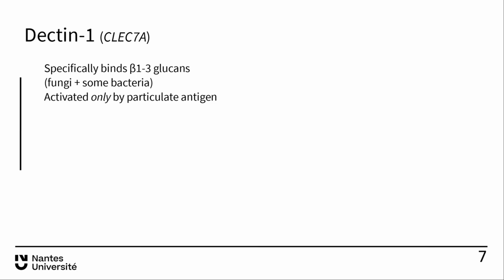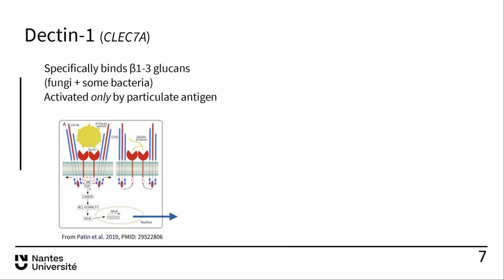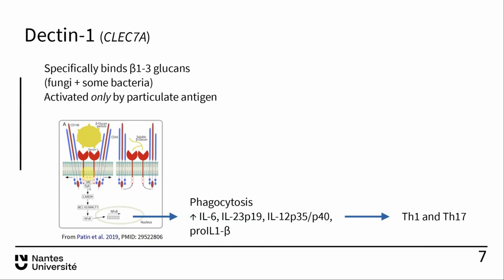Dectin-1 activation induces phagocytosis and increased expression of NF-κB-controlled genes including IL-6, IL-23, IL-12, and the precursor of IL-1β, stimulating Th1 and Th17 immune responses. You need complete yeast cells or conidia — not soluble beta-glucan — to get activation. The importance of Dectin-1 was shown when a family with an autosomal recessive mutation was identified in 2009: three girls homozygous for a stop codon in the C-terminal carbohydrate recognition domain of Dectin-1.